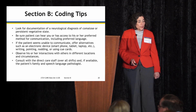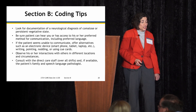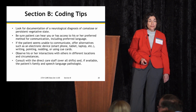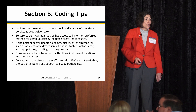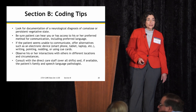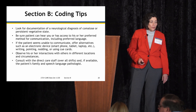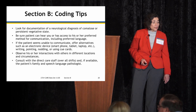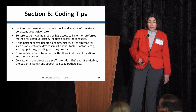Coding tips: Look for documentation of a neurological diagnosis of comatose or persistent vegetative state. Be sure the patient can hear you or has access to their preferred method for communication, including preferred language. If the patient seems unable to communicate, offer alternatives such as electronic devices, smartphone, tablets, laptops, writing, pointing, nodding, or using a cue card. Observe interactions with others in different locations and circumstances, consult with direct care staff over all shifts, and if available, talk with the patient's family and speech-language pathologist.